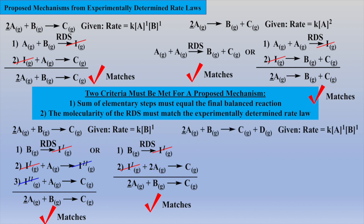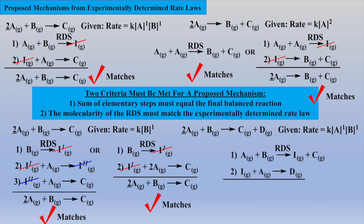In our final reaction, the experimentally determined rate law indicates the RDS must be first order with respect to A and first order with respect to B. Let's write step 1 as the RDS with that molecularity, assuming an intermediate and product C are formed. Then in step 2, the intermediate reacts with another A to form product D. The intermediates cancel and the sum equals the final balanced equation. This proposed mechanism meets both criteria and very well may be the correct mechanism.